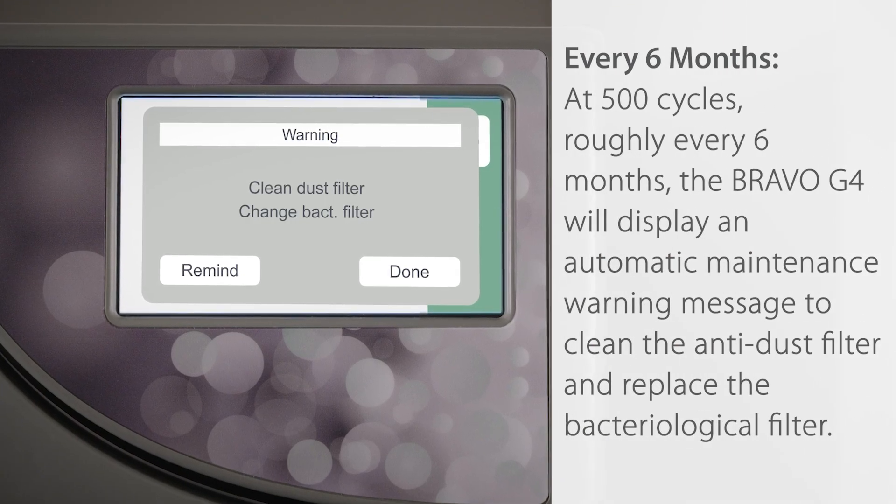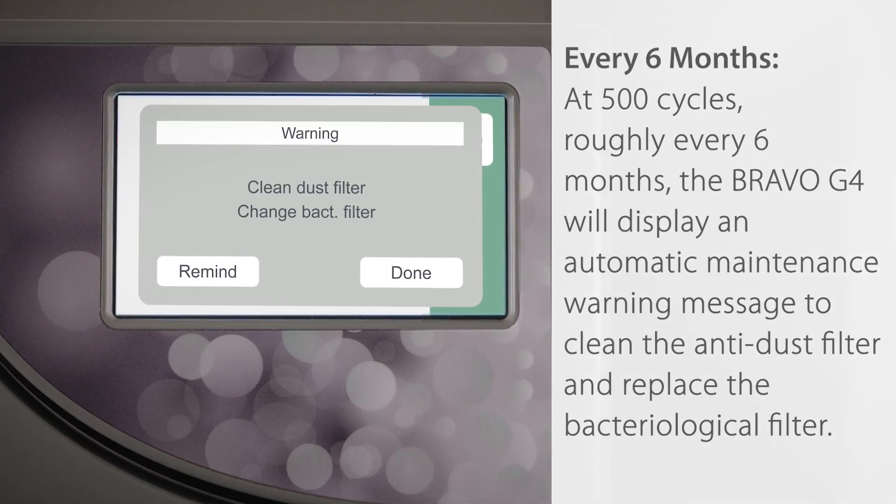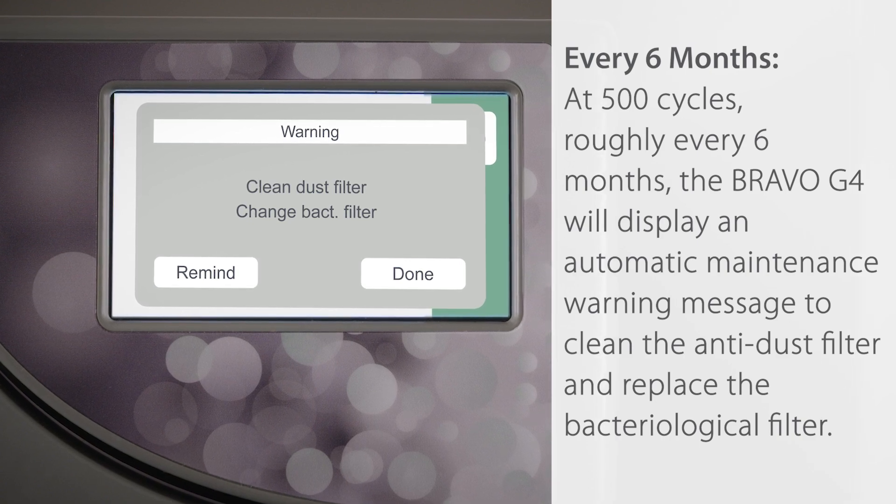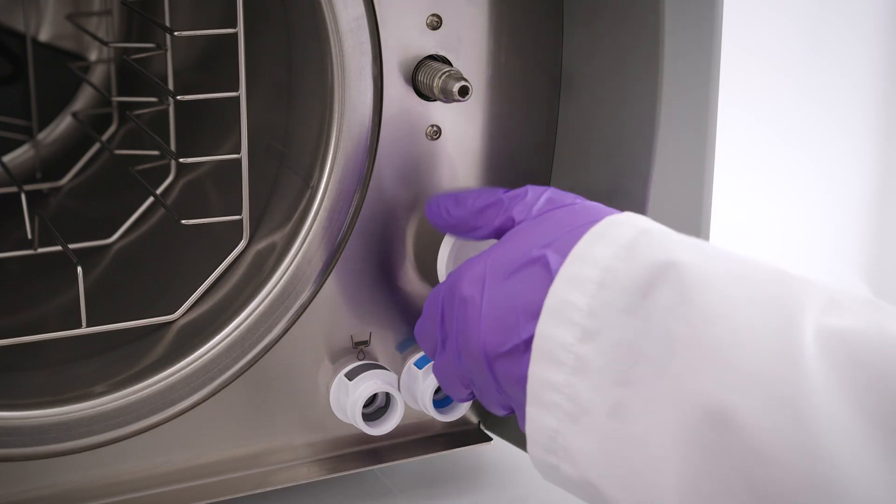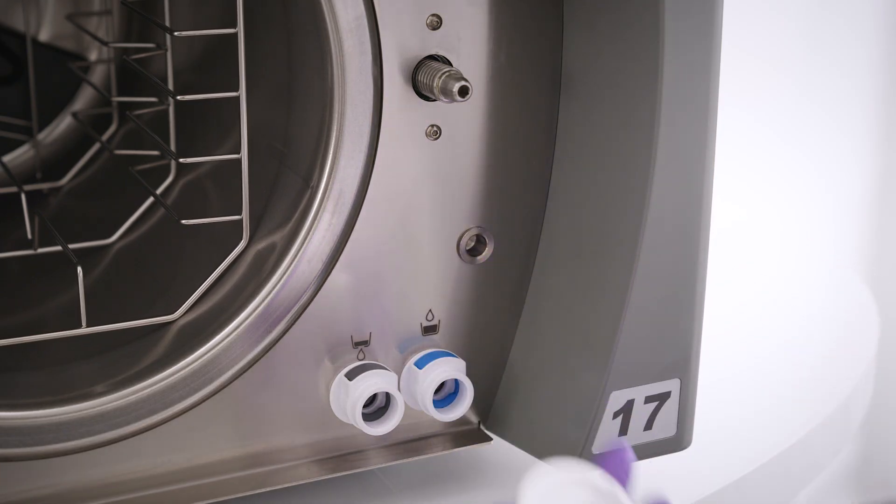Every six months, at 500 cycles, roughly every six months, the Bravo G4 will display an automatic maintenance warning message to clean the anti-dust filter and replace the bacteriological filter.